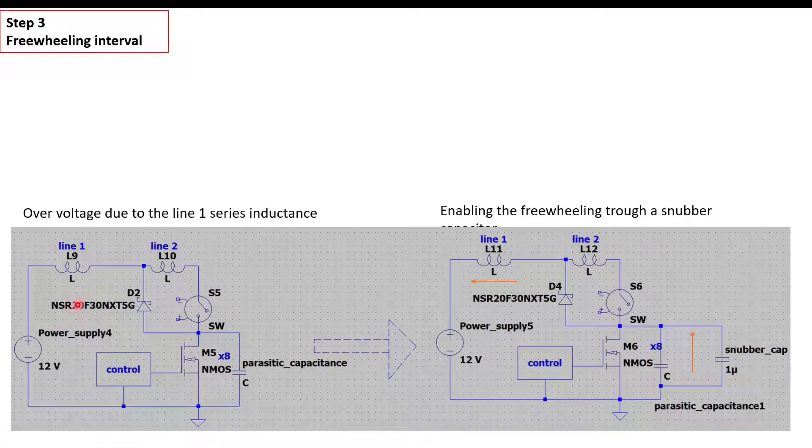In the further phase, we will see the freewheeling interval. Normally, every time the MOSFET closes, the current not only flows through the inductance of line two, but also through line one, so line one is charged as well.